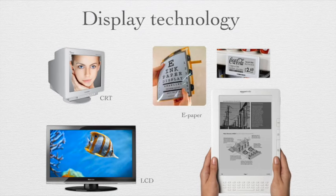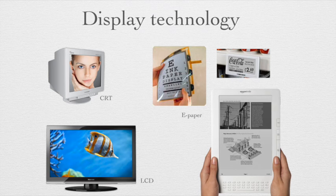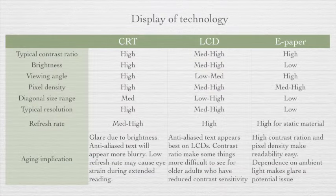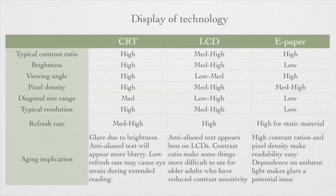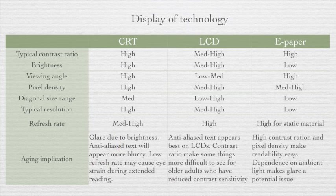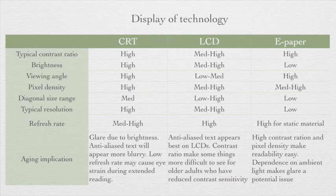There are three main display technologies in use today. The first is called Cathode Ray Tube or CRT. The second is called Liquid Crystal Display or LCD. And the third is E-paper technology. All of these displays interact with age-related changes in visual ability, which may make reading more difficult. The CRT has a problem in terms of glare due to brightness, the LCD has a contrast ratio problem that makes it more difficult to see for older adults, and E-paper has a problem with ambient light levels in the room.